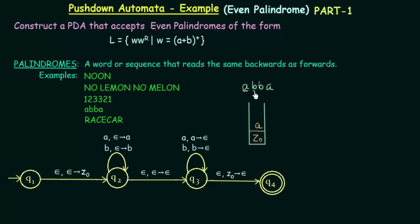Now we have reached the midpoint of the string. At the midpoint, we don't read anything, don't pop anything, and don't push anything — we directly transition to state Q3.